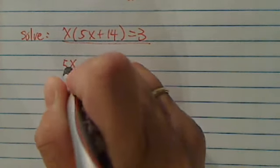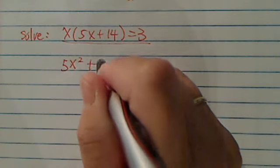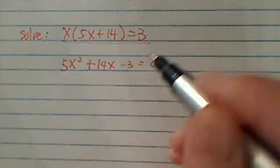So let's distribute this one in here. So I have 5x squared plus 14x, and then I have minus 3 equal to 0.